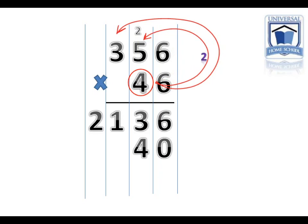Step 2. 4 times 5 equals 20, plus the 2 equals 22. We put the 2 down, and we carry the 2.